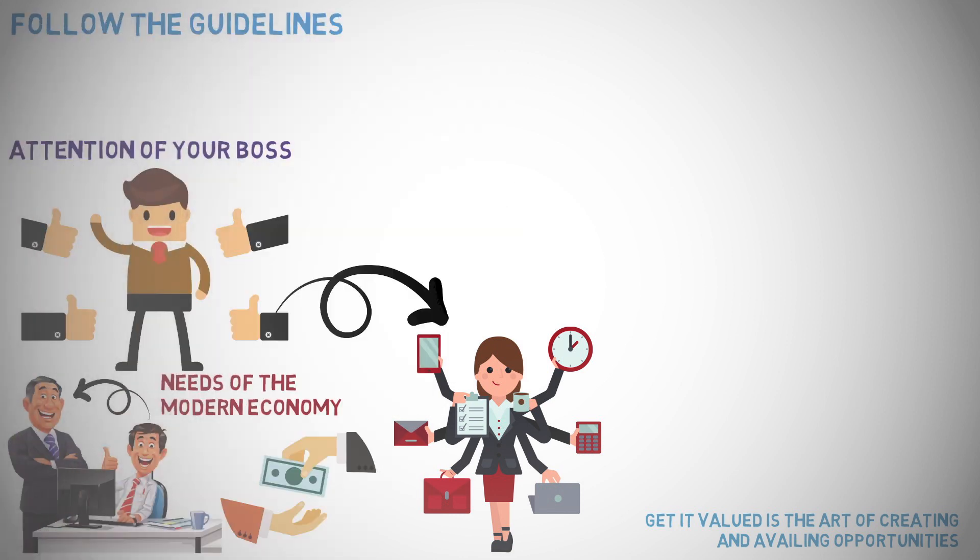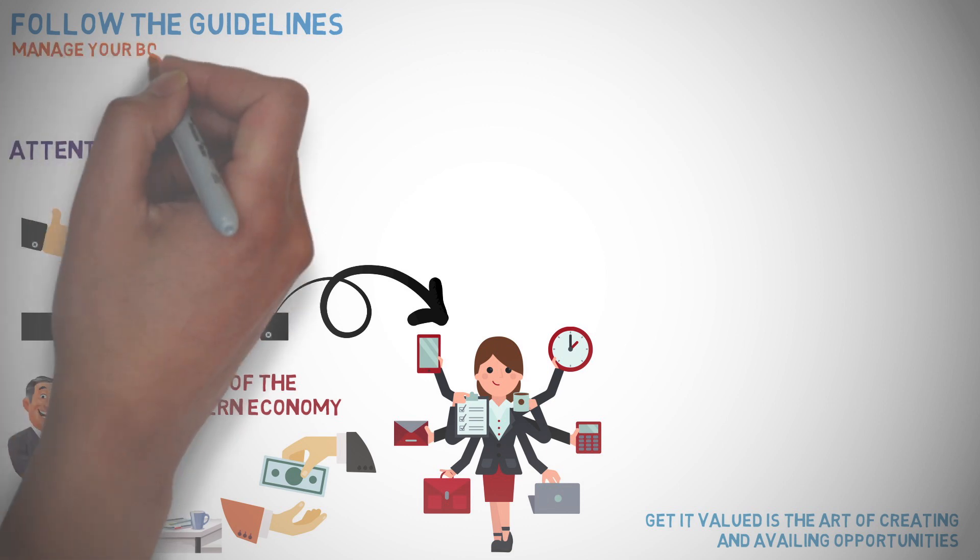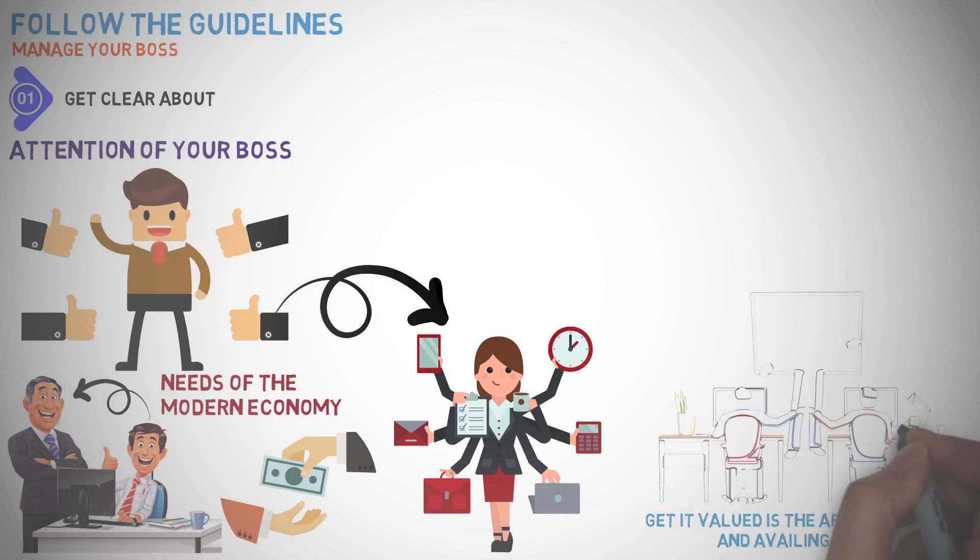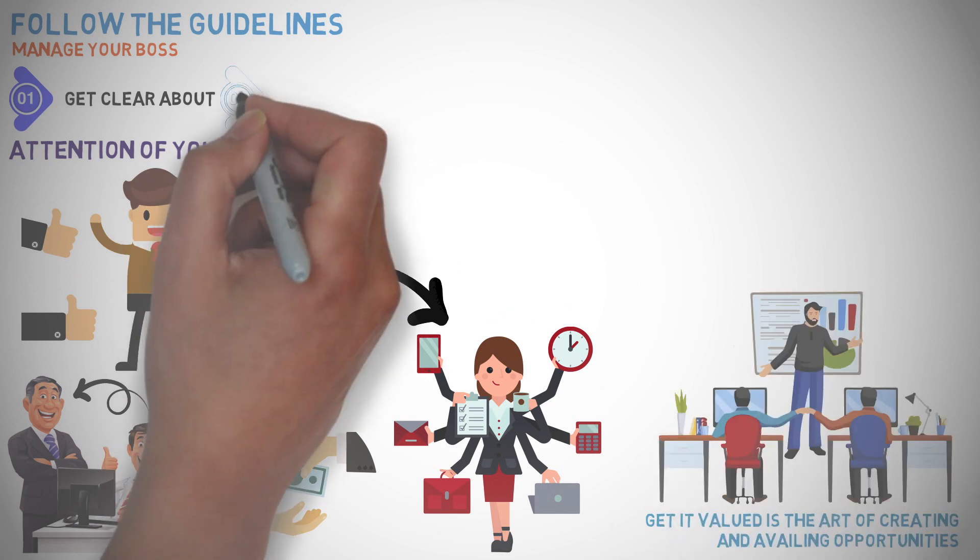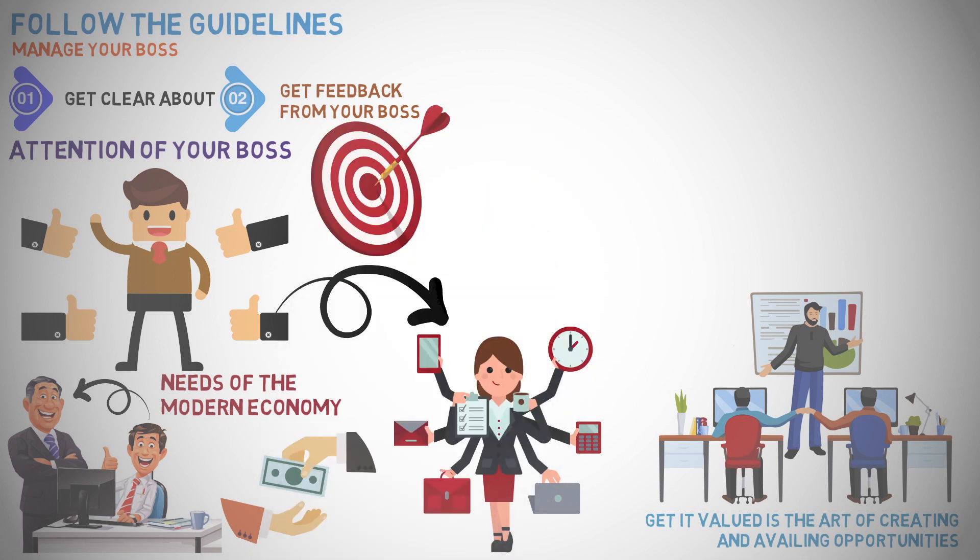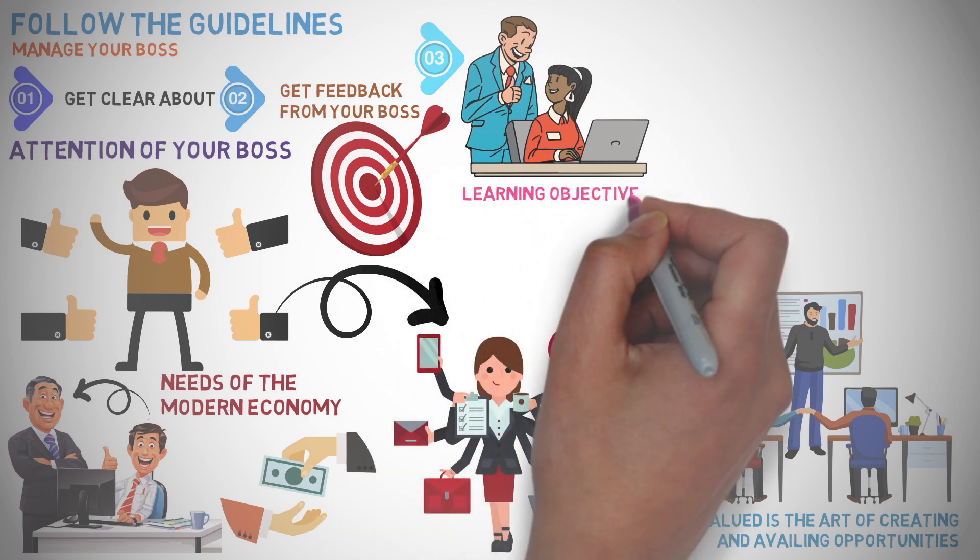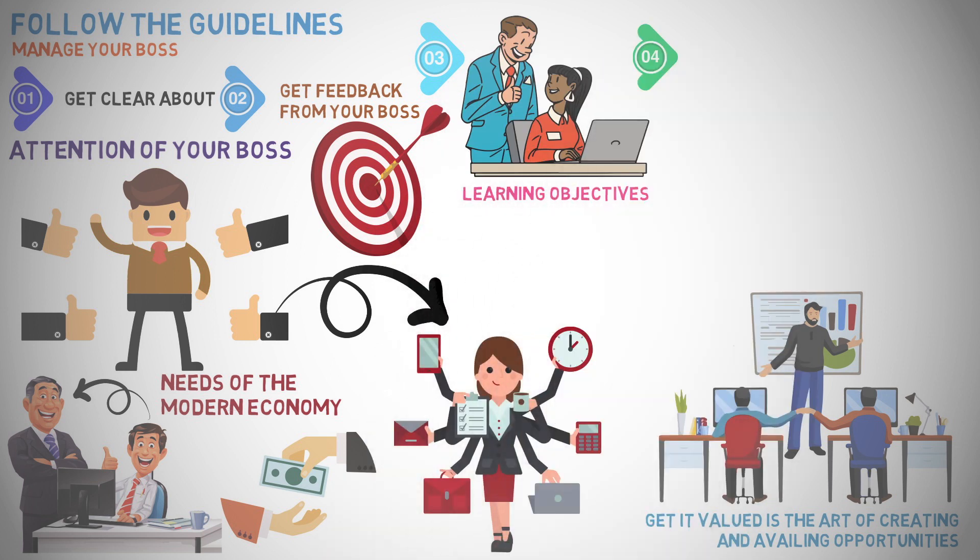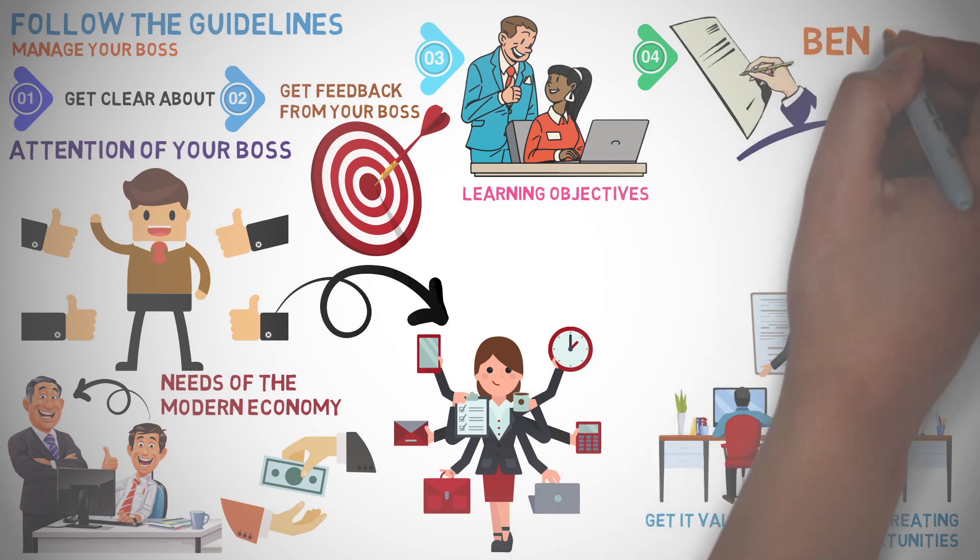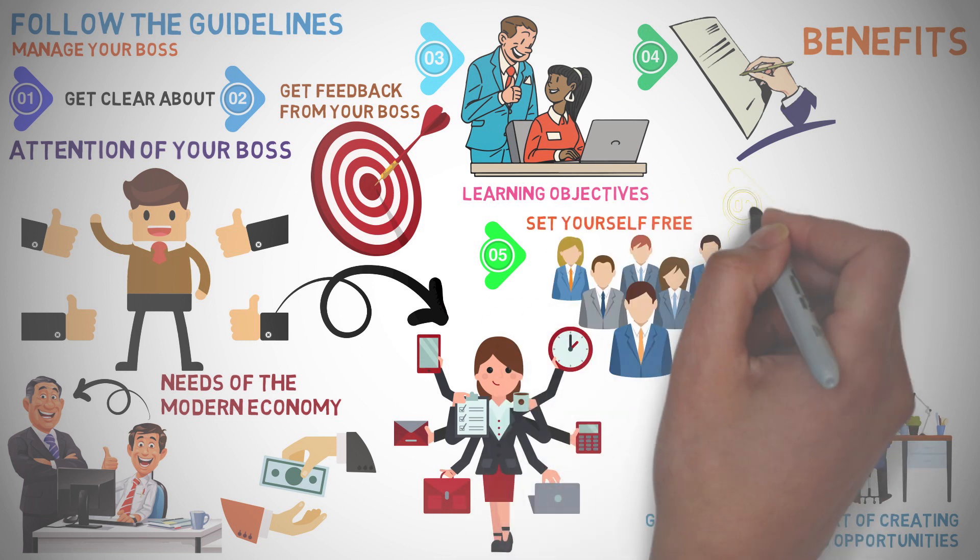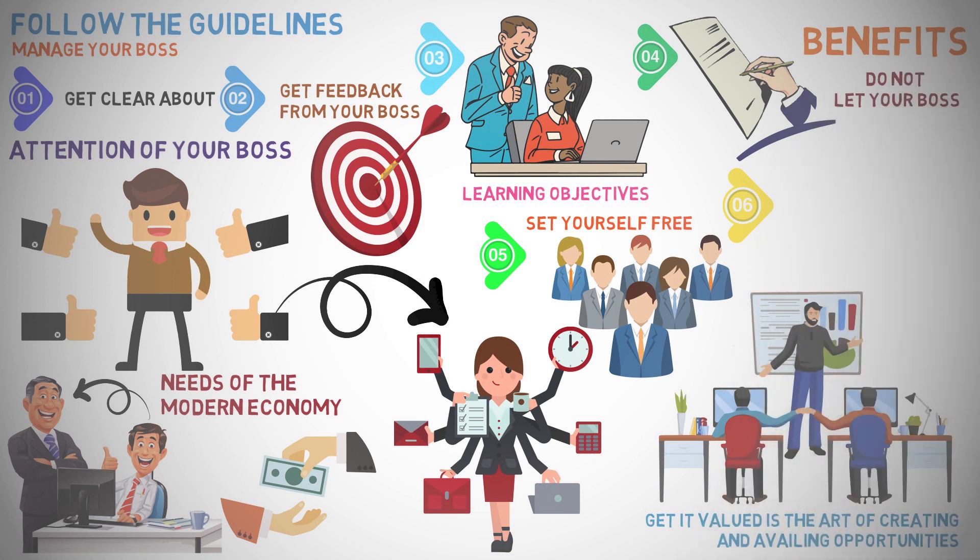You must follow the guidelines suggested below to manage your boss in this respect. 1. Get clear about the assignments you get from your boss. 2. Get feedback from your boss upon accomplishing your goals. 3. Get your managers support on setting specific learning objectives. 4. Put your requests in a proposal form to suggest benefits. 5. Set yourself free from the micromanagement to get space. 6. Do not let your boss take you for granted.